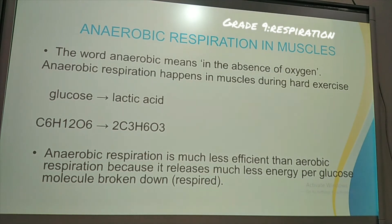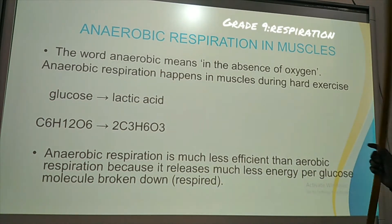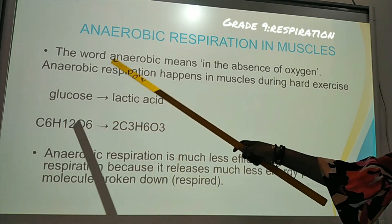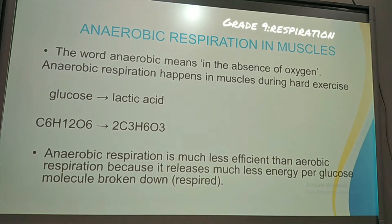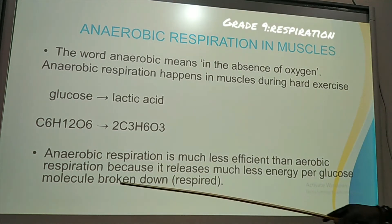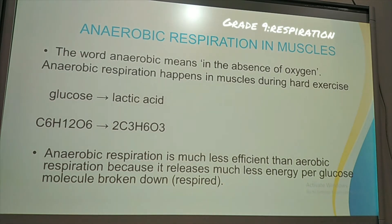Anaerobic respiration happens in muscles during hard exercise — when you go to the gym, you're playing football, during hard exercise, you have anaerobic respiration in muscles. Glucose breaks down to lactic acid. There is no oxygen; only glucose to lactic acid. That is in muscles. Anaerobic respiration is much less efficient than aerobic respiration because it releases lesser energy per glucose molecule broken down. Unlike aerobic respiration, which produces a large amount of energy, anaerobic respiration produces far less.